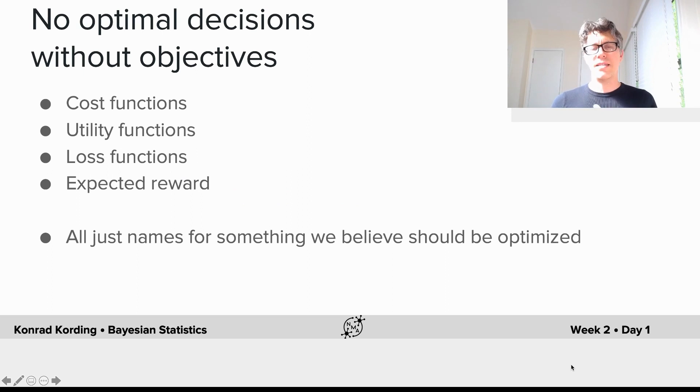It's impossible to argue that some behavior is optimal unless we can have reasons for why there is a cost function that we can understand.